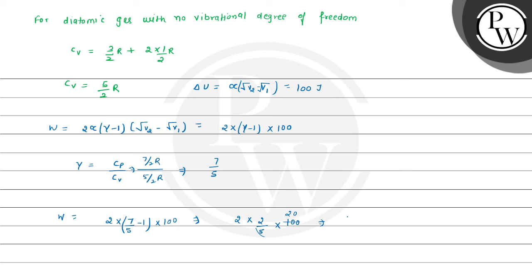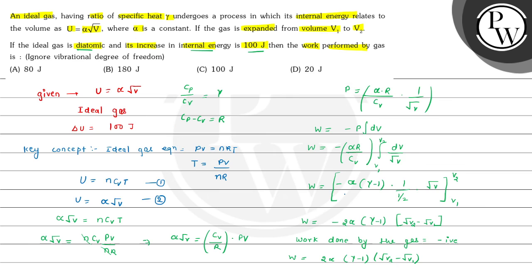The work done in this process is 80 joules, which corresponds to option A. Hence option A is the correct choice for this question. Hope you understood it well. All the best and thank you.